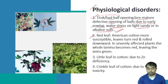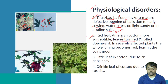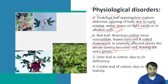Red leaf is actually a problem in American cotton, which is the most susceptible. In this case, the leaf will turn red and roll downward. In severely affected plants, all the lamina becomes red, leaving only the veins green — only the veins will remain green and all the lamina will become red.